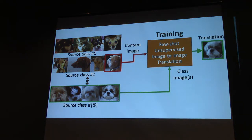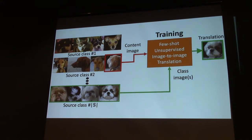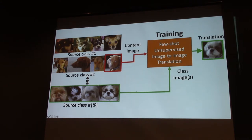Now I'll talk about the training setting. In order to train a model for this task, we define a training objective that gives the right incentive. We have a large set of training data with different object classes — say S classes, which could be around 100 or 500. During training, we ask the model to practice operating in the few-shot setting: given a content image of one dog breed and a few example images of another breed, the network learns to transfer between breeds using only those few examples. We keep doing this by randomly sampling different source and target images.